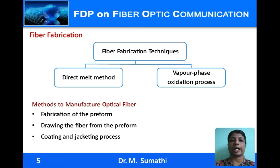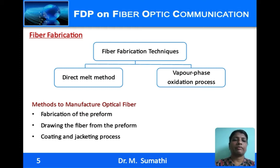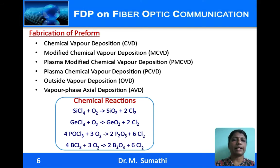The various steps to manufacture an optical fiber are: fabrication of the preform, drawing the fiber from the preform, and coating and jacketing processes. First, pure vapor forms of metal halides like silicon chloride or germanium chloride are oxidized with oxygen to form respective oxides such as silicon oxide or germanium oxide. These form a white powder which is sintered to form preforms — glass rods or tubes. Once the preforms are formed, the tip is heated and fibers are drawn, then coated for protection.